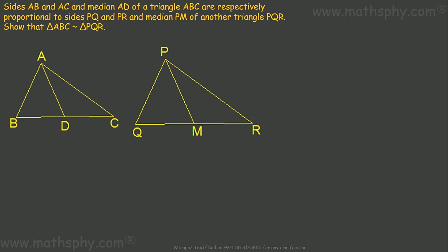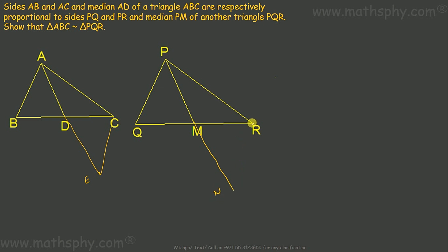To do this, we need to extend line AD equal to AD itself, taking that new point as E, and connect E to C. Similarly, we extend PM equal to PM, taking that new point as N, and connect N to R. So we now have point E, point N, segment EC, and segment NR.